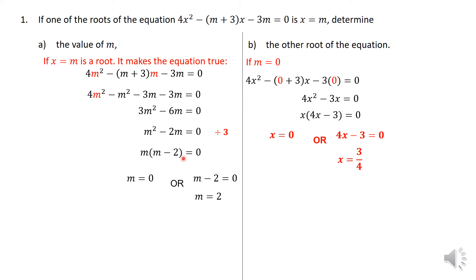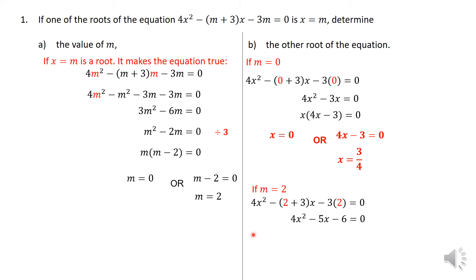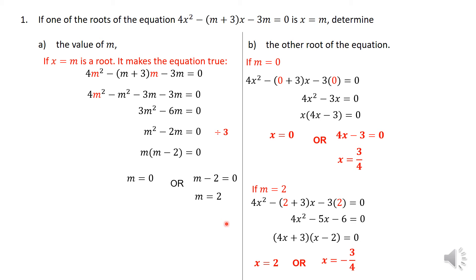You also do the same when m = 2. Substitute into the original equation when m = 2. When you clean that up, you get 4x² minus 5x minus 6 equals 0. You should be able to factorize this and solve this particular quadratic equation. Remember, if you multiply two factors and get 0, one factor equals 0. So 4x + 3 = 0 or x − 2 = 0, and then you solve those linear equations.